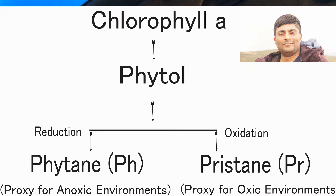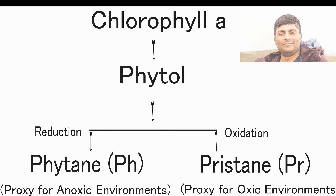Pristane and phytane are very important biomarkers because they serve as proxies to explain the paleo-environment. If we find abundant pristane in the analysis of rock samples, we can infer an oxic redox environment, since pristane is produced by oxidation or decarboxylation. Conversely, if phytane is found in greater abundance than pristane, we can say the environment was anoxic.